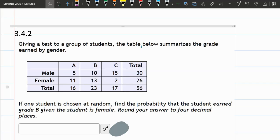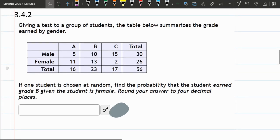We're looking at another chart really similar to the previous example, given a test to a group of students. This is going to summarize the grade earned by gender. Now if one student is chosen at random, find the probability that a student earned a B, given the student is female.